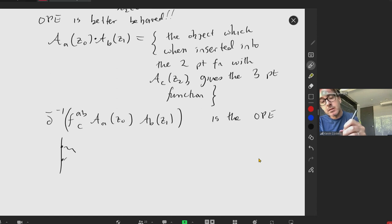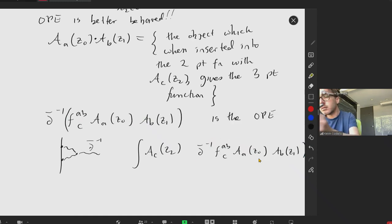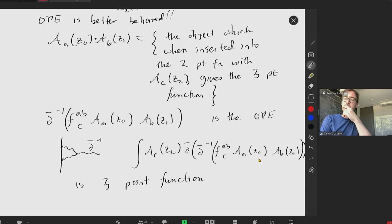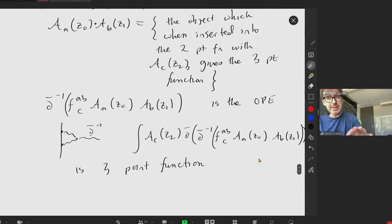And you can imagine that as follows. There's my first state. And then here, d-bar inverse is the propagator coming off like that. So why is this the OPE? If I insert A_c at z2, times the d-bar of that, I'll clearly the d-bars cancel. Here's the three-point function.